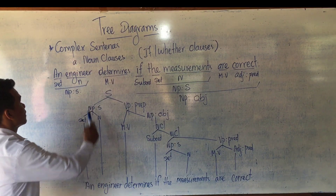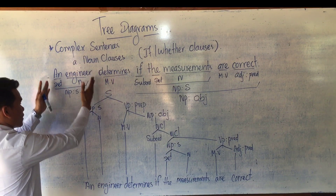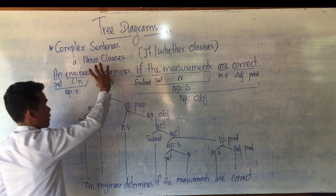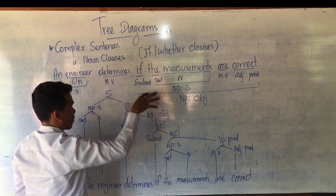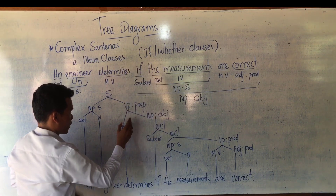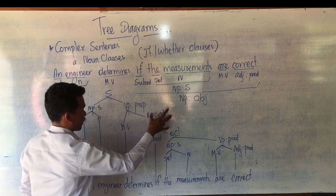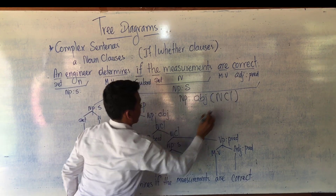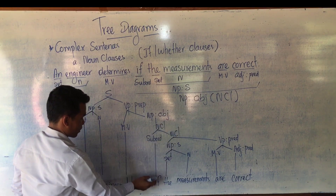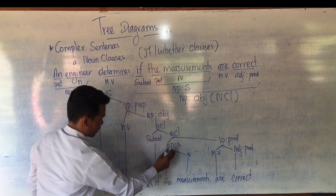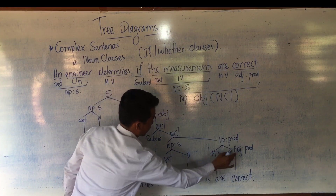This is the three-diagram of the 'if' clause as the object of a verb. In a complex sentence with an 'if' adverbial clause, first you analyze the noun phrase subject, then the rest is the verb predicate. The noun clause becomes the object. Inside the noun clause, we have the subordinator, then the noun phrase subject with determiner and noun, and for the predicate we have the main verb and adjective.